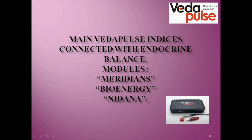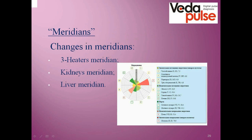Here are the main beta pulse indices connected with endocrine balance: the modules, meridians, bioenergy, and nidana. In the meridians module, there are no markers that directly show pathology of female sex organs. We can evaluate indirect indications that tell us about the cyclicity of sex hormones. For a better picture, there should be a combination of patient observation, anamnesis, and lab tests. With beta pulse we can look at three meridians: the three heaters meridian, which reflects the state of the endocrine system, and the liver meridian, which is also responsible for sex functions because sex hormone metabolism happens in the liver.